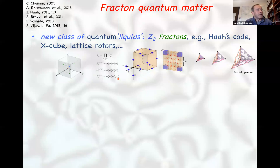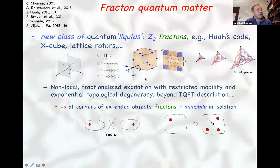The X-cube Hamiltonian is a sum of commuting projectors — an operator A and three other operators B defined on the lattice. These models exhibit non-local fractionalized excitations much like conventional spin liquids. However, these excitations have restricted mobility under local spin dynamics. Under local rules of spin flips, these excitations cannot move freely.